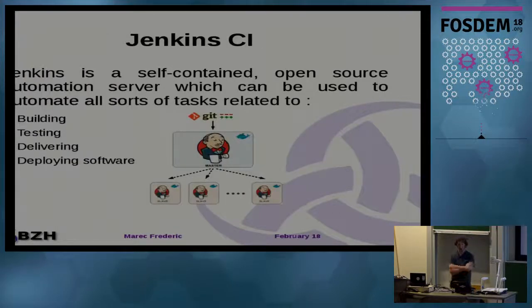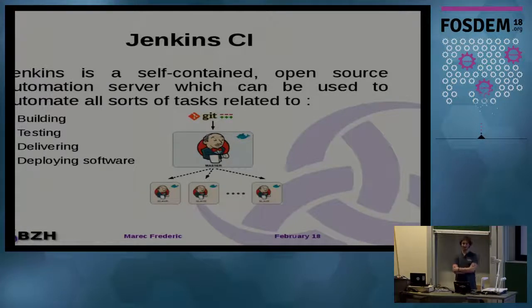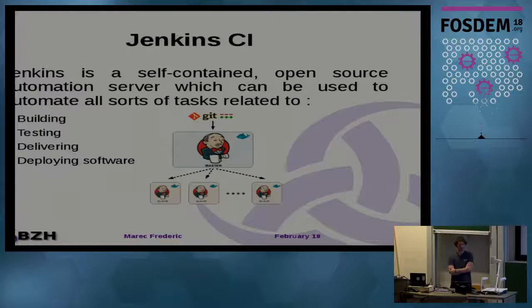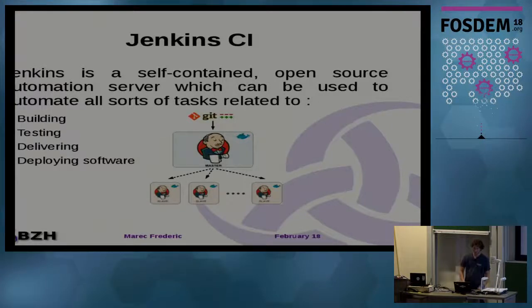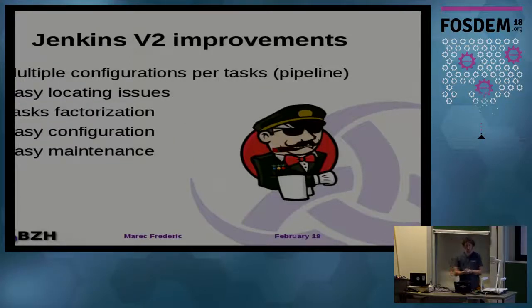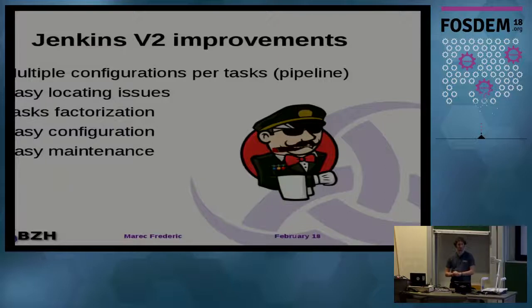Now we can talk about Jenkins continuous integration. It's a self-contained open source automation server which can be used to automate building, testing, delivering, and deploying software. Jenkins version 2 brings multiple configurations per task, known as a pipeline.